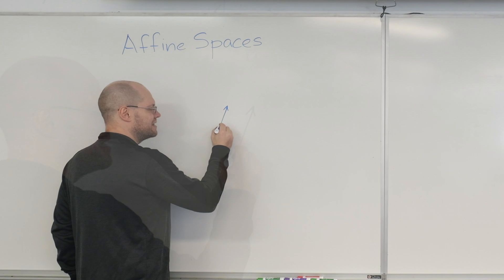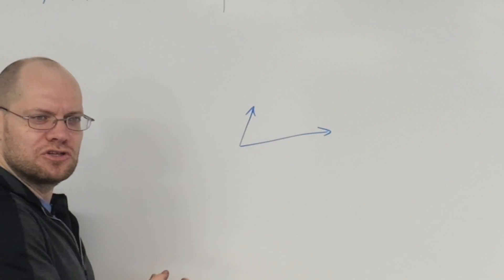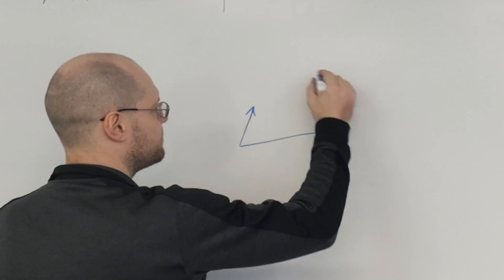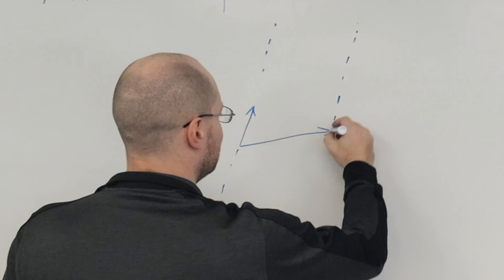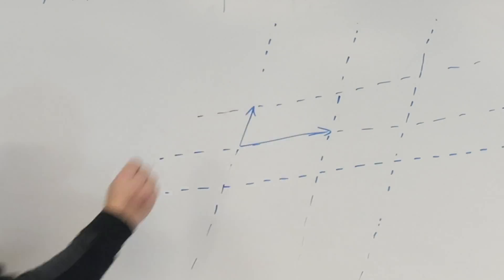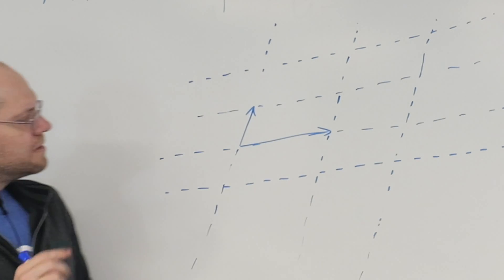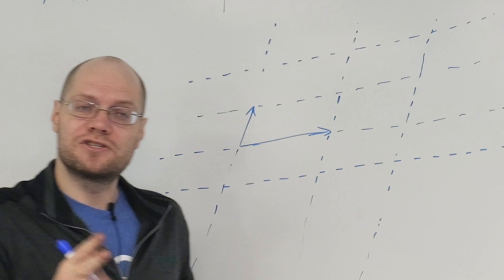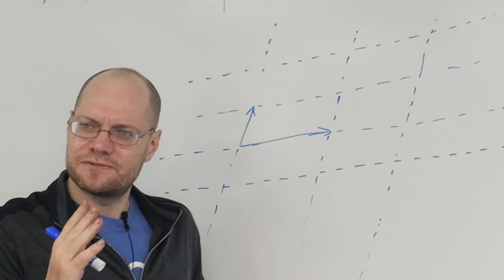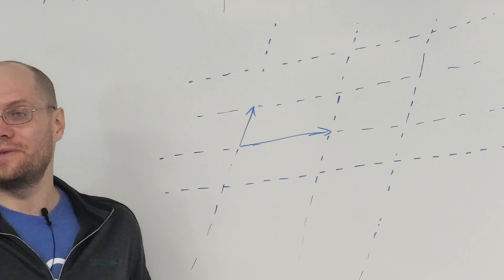And if you start with two vectors like this, and you start evaluating linear combinations, then you get this kind of a skewed grid. And here's the interesting thing that happens. First of all, when I hear affine space, my brain visualizes a grid like this.